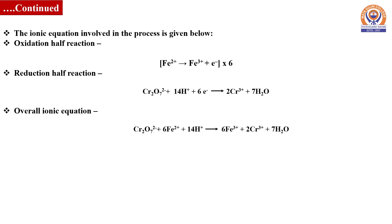The ionic reaction involved in the titration can be obtained by the addition of oxidation half reaction, in which ferrous ions get converted into ferric ions with the loss of one electron, and the reduction half reaction where dichromate ions are reduced to Cr³⁺ ions by gaining six electrons.